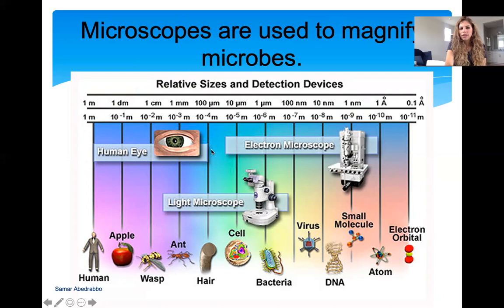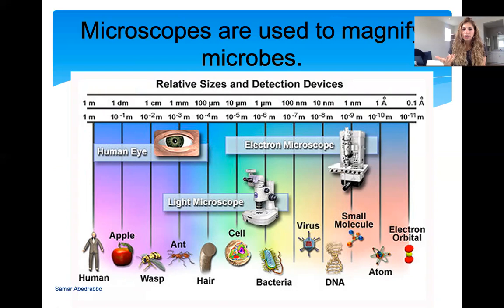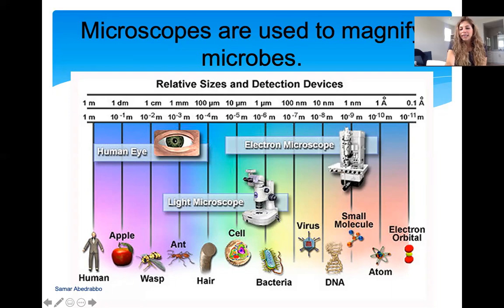Now let's get to microscopes. When we look at measurements from big to small: meters are very big, nanometers are very small — we measure viruses in nanometers. Your eye can see up until the millimeter range, about the size of the point of a pencil or an ant. Anything smaller than that, you need a microscope. The microscope we use in lab is the light microscope — it measures micrometer size.